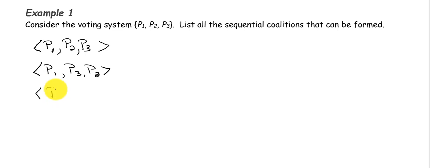Now we'll switch to player two being in the first position. Next we could have player one, and then we could have player three. And the only other coalition that starts with player two in the first position would be switching players one and three around. So player three and player one.